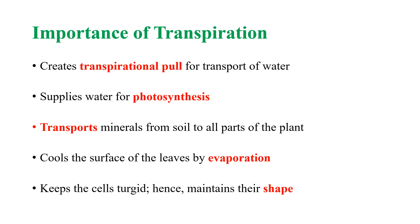Let us go through the importance of transpiration. Transpiration creates transpirational pull. It helps in photosynthesis by supplying water. It helps in the transport of minerals from soil to all parts of the plant. Transpiration leads to evaporation of water in the leaves, thus cooling the surface of the leaves. It also maintains the shape of the cells by keeping the cells turgid.